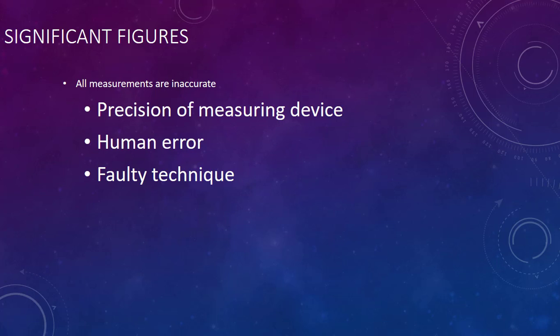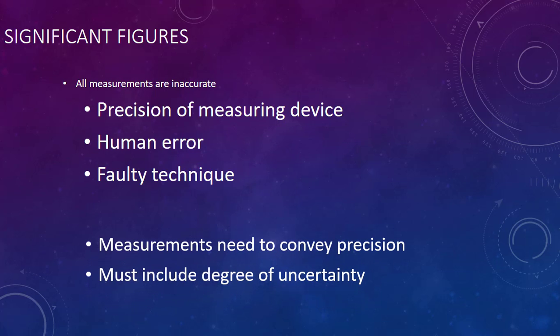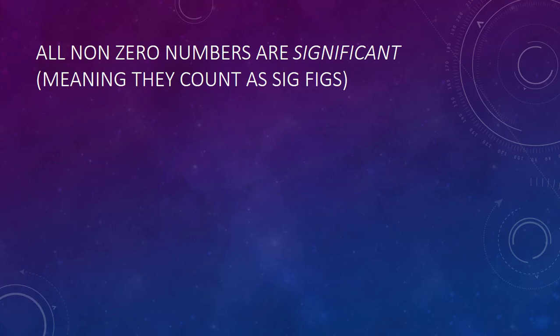This leads us into the idea of significant figures. When you write down a measurement or the answer to a calculation, how many numbers do you use? The thing to keep in mind is that all measurements are inaccurate to a certain degree. This inaccuracy depends on the measuring device itself, as well as the human or non-human doing the measuring. So when we record a measurement, the way in which we write the number indicates the precision that we used and the degree of uncertainty that we have.